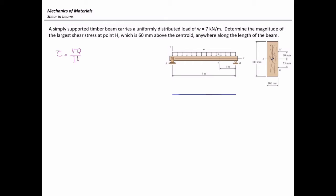First, let me determine the value of shear force. This beam is subjected to a uniform load everywhere along the length of the beam, and the value of reaction forces are wL over 2 at both ends. W is 7 kilonewtons per meter, and the length of beam is 4 meters, giving a reaction force on each side equal to 14 kilonewtons. Drawing the shear diagram, the shear force on the left side would be 14 kilonewtons, going down by a slope of 7 kilonewtons per meter, and at the other end that would be negative 14 kilonewtons.